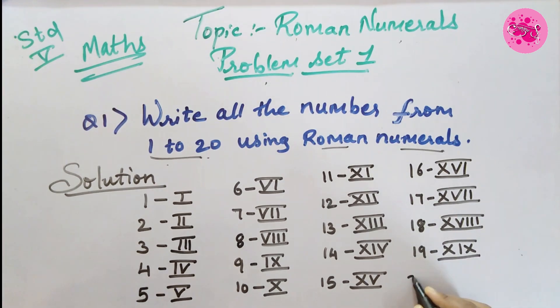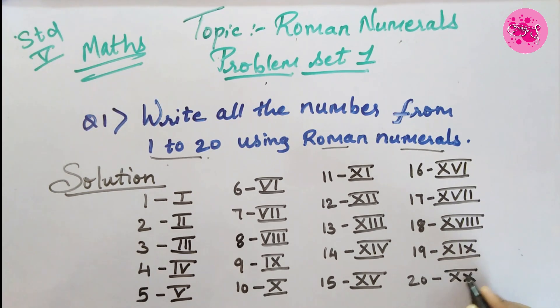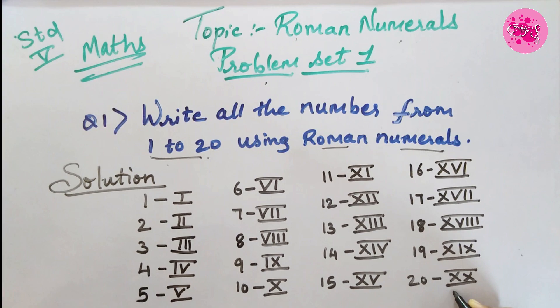For 20 we write XX, because X represents 10, so two tens make 20.